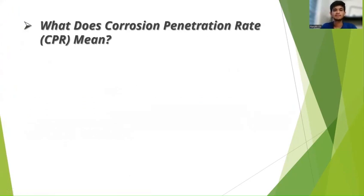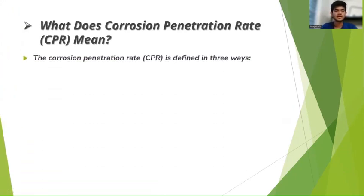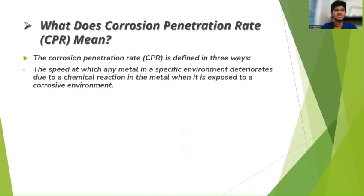First of all, what does corrosion penetration rate mean? The corrosion penetration rate is defined in three ways. First one: the speed at which any metal in a specific environment deteriorates due to a chemical reaction when it is exposed to a corrosive environment — that is, the speed at which a metal or alloy gets corroded due to some chemical reaction when exposed to a corrosive environment like moisture, air, etc.